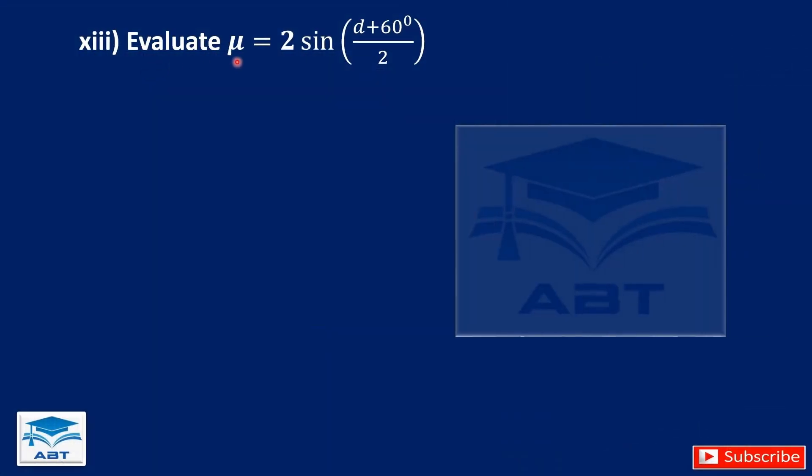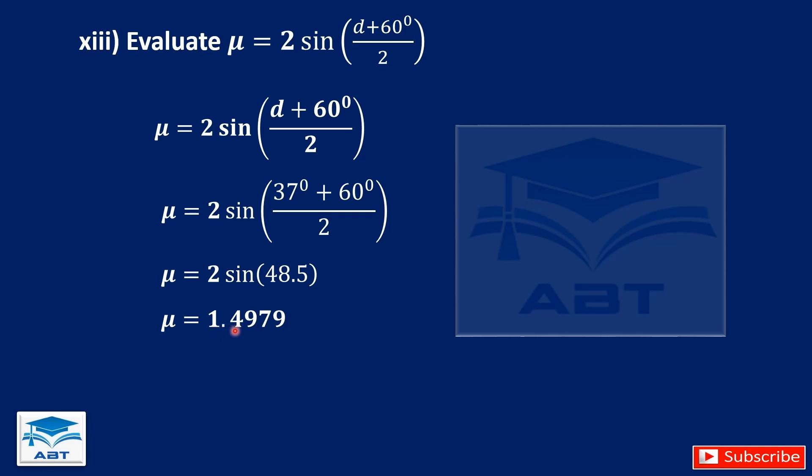Evaluate mu equals sine of (D plus 60 degrees) divided by 2. So we have mu equals sine of (D plus 60 degrees) divided by 2. But D is 37 degrees, so we replace it. And 37 degrees plus 60 degrees divided by 2 will give us 48.5 degrees. And 2 sine of 48.5 degrees is 1.4979 to 4 decimal places. So mu equals 1.50 to 2 decimal places.